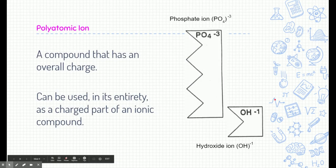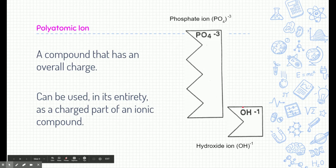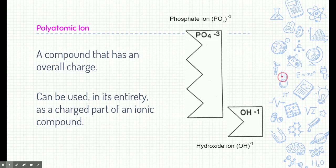Now let's talk about polyatomic ions. Polyatomic ions are compounds that have an overall charge, which is unusual since we've been saying compound charges cancel out. But certain compounds formed in nature still carry a charge. One example is phosphate — PO4 — which has an overall charge of minus three, so we treat it as one piece with a minus three charge. Another example is hydroxide — OH — with an overall charge of negative one.